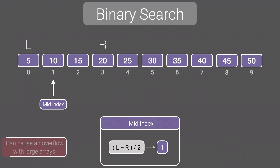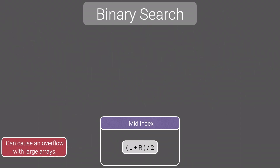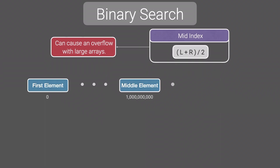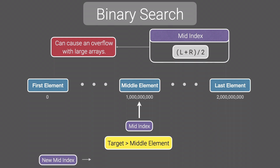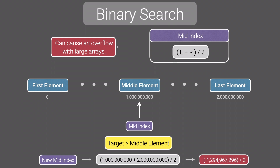In some programming languages, adding the left index to the right index will cause an overflow with very large arrays. For example, if our last index is 2 billion, then our middle index would be 2 billion divided by 2, which is 1 billion. If our target is greater than the middle element, the new min index would be 1 billion plus 2 billion divided by 2. That initial sum would cause an overflow in a language like Java, since it exceeds the maximum value for an int, resulting in negative 1,294,967,296 divided by 2 — which is not a valid index.